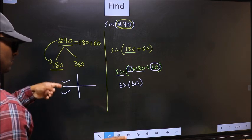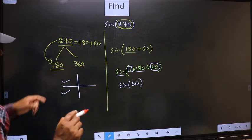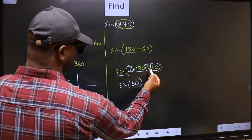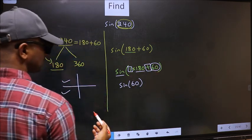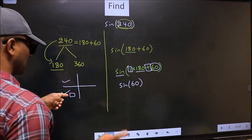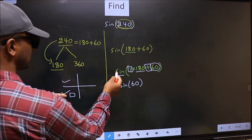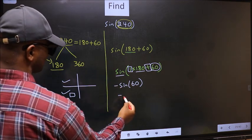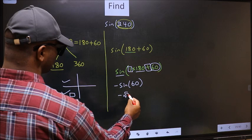So now, to select the quadrant, we should look at this symbol. Here we have plus. That means angle lies in the third quadrant. And in the third quadrant, sine is negative. So we should put negative. So negative sine 60 is root 3 by 2. This is our answer.